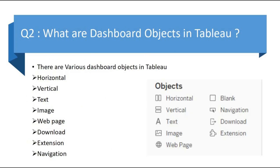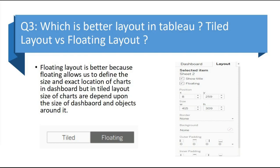The second question is: what are the dashboard objects in Tableau? There are various dashboard objects in Tableau — horizontal, vertical, text, image, web page, blank, navigation, download, and extension. These dashboard objects are very useful to make the dashboard interactive and easy to use for the users.